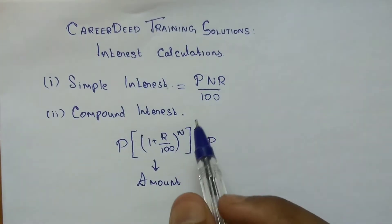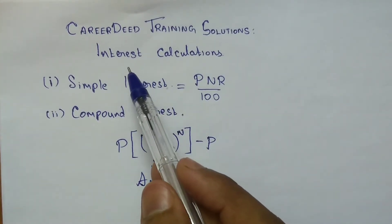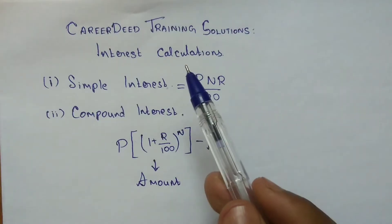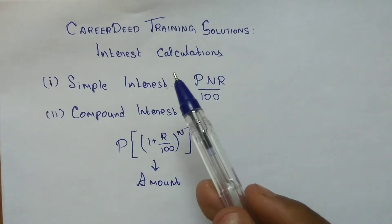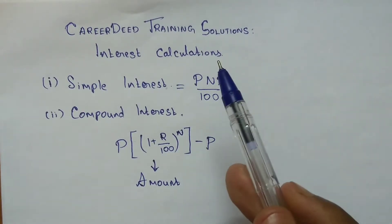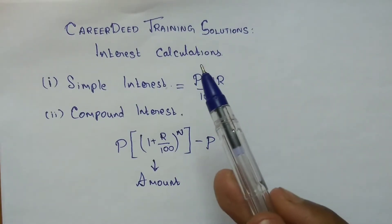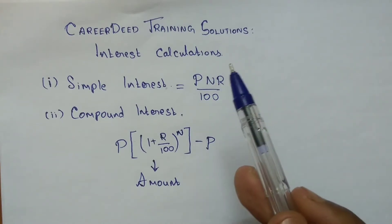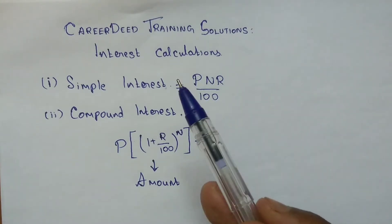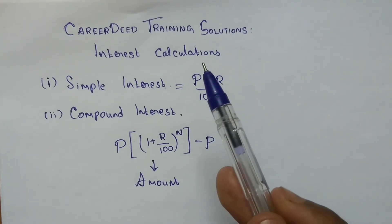Welcome to Career Day Training Solutions. Today's topic is interest calculations. We have been using this term interest from our school days, and it is frequently used in banking. Banks usually take two types of processes: they take your amount as deposit, and if you deposit some amount to the bank, the bank will pay interest every year, every half year, or every quarter. Similarly, if you are in need of money, you can approach the bank and take money as a loan.